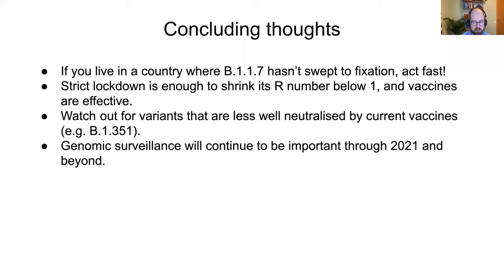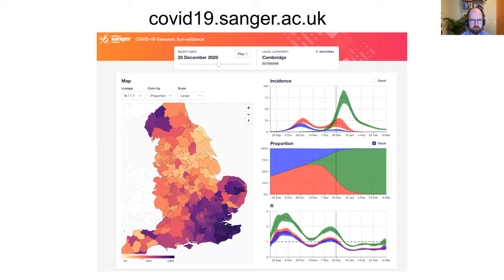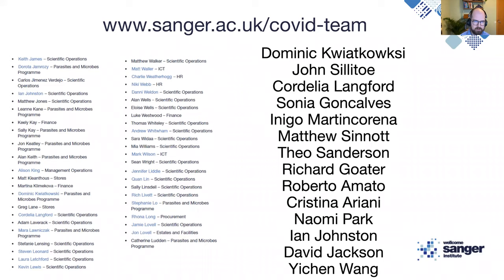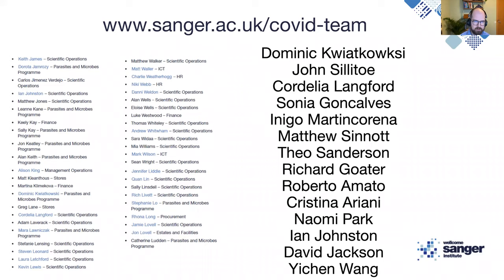We believe genomic surveillance will continue to be important around the world. There's a web app at covid19.sanger.ac.uk that lets you explore the graphs I've shown, location by location, with a one-week turnaround from swab to website — an amazing achievement. Finally, I want to thank the hundreds of people who have come together in what has been the most rewarding and amazing experience of my scientific career, using our facilities and talents to make a contribution to the pandemic.